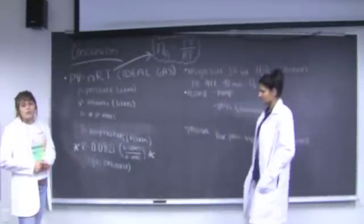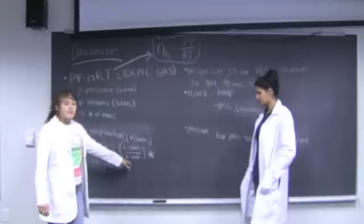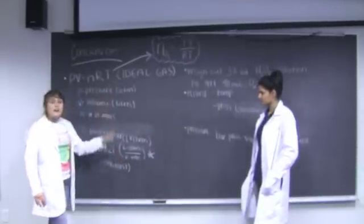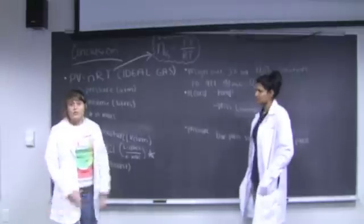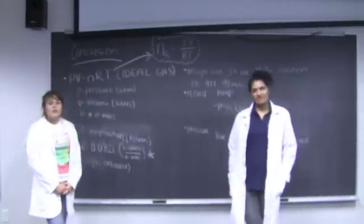and R is our gas constant. In this case, we're going to be using 0.0821 liters times atmospheres over K times moles, and as you can see, all the units will cancel out except for our moles, which in this case is what we're solving for. And remember to take the readiness test and read your lab packets.